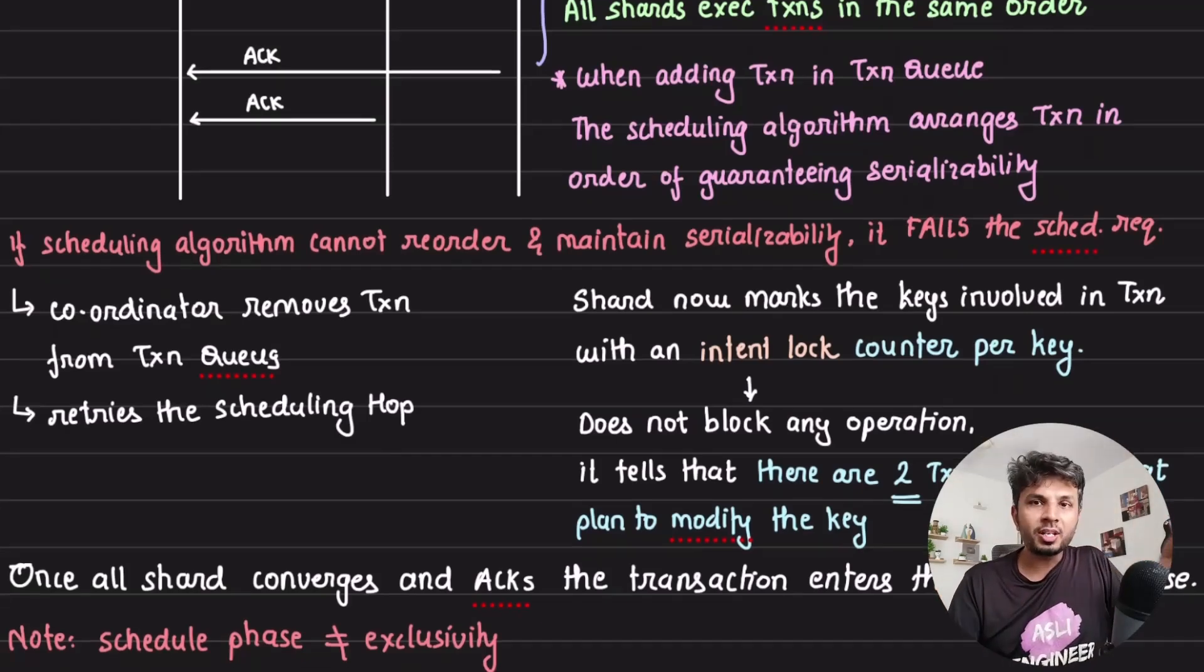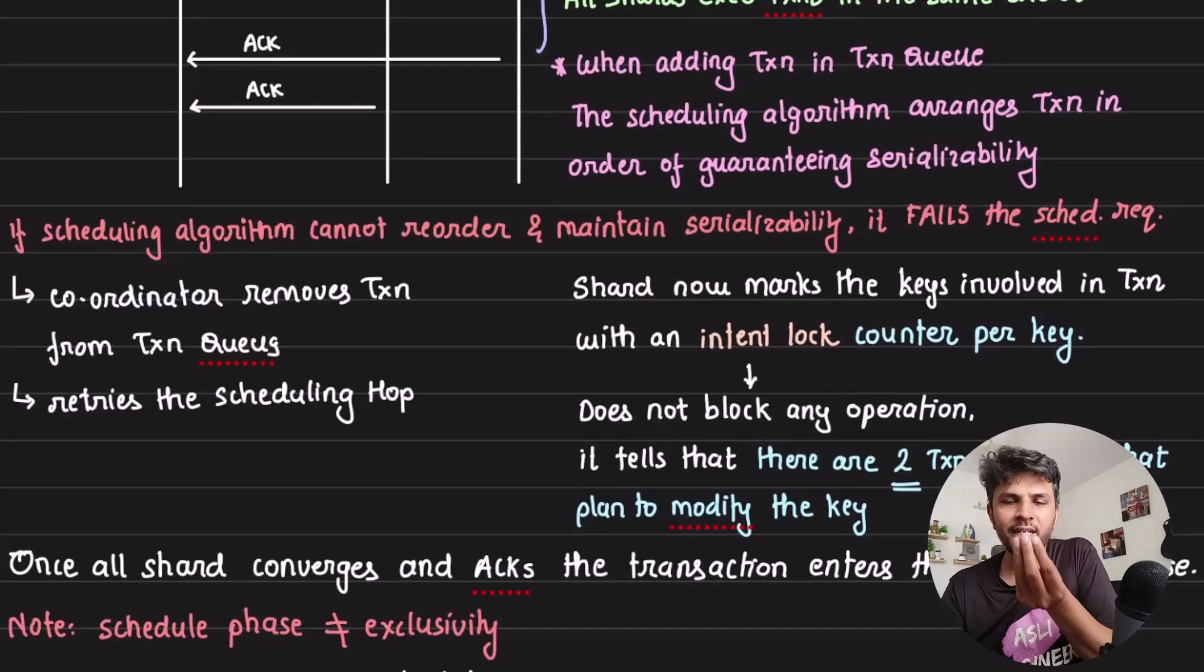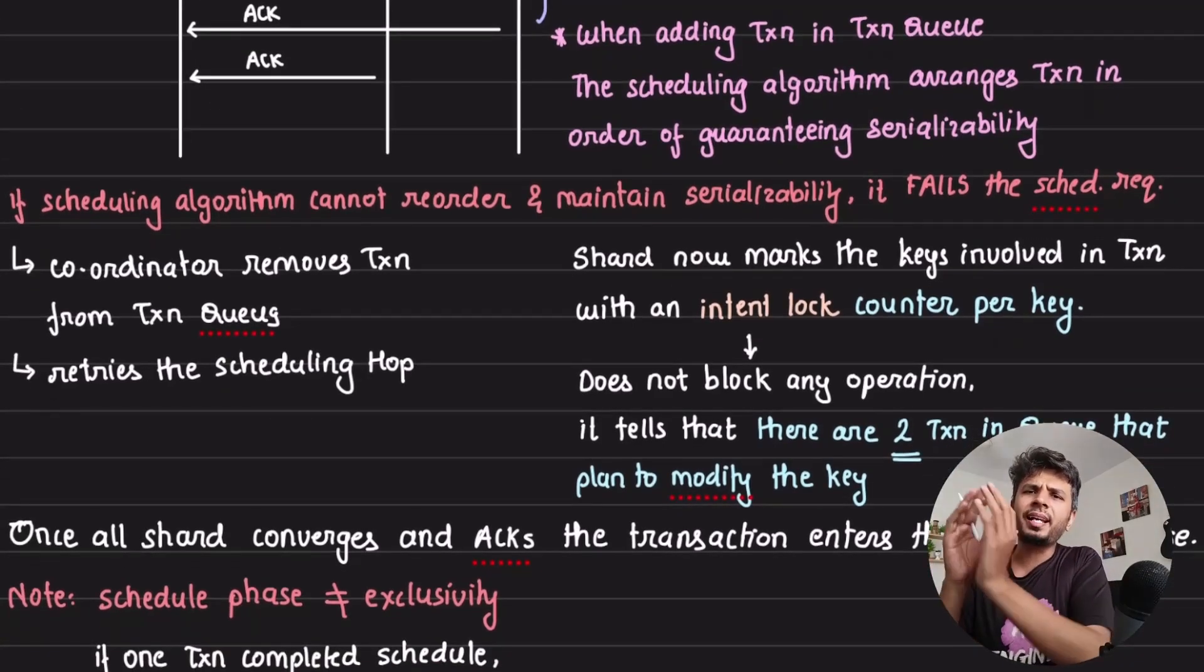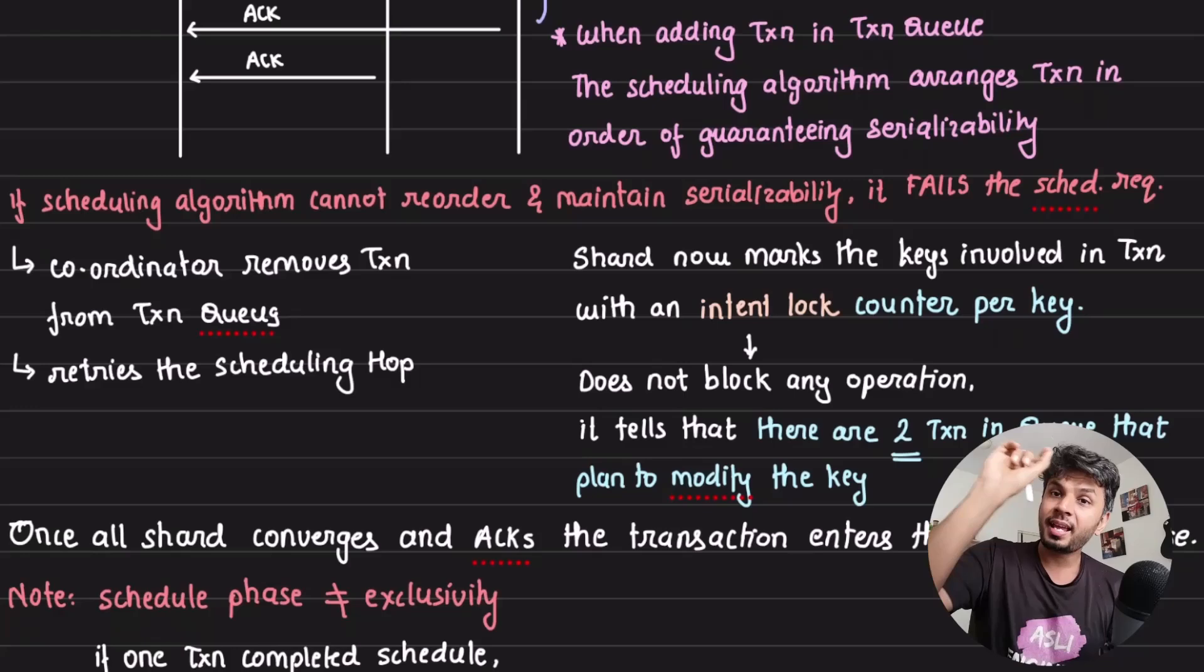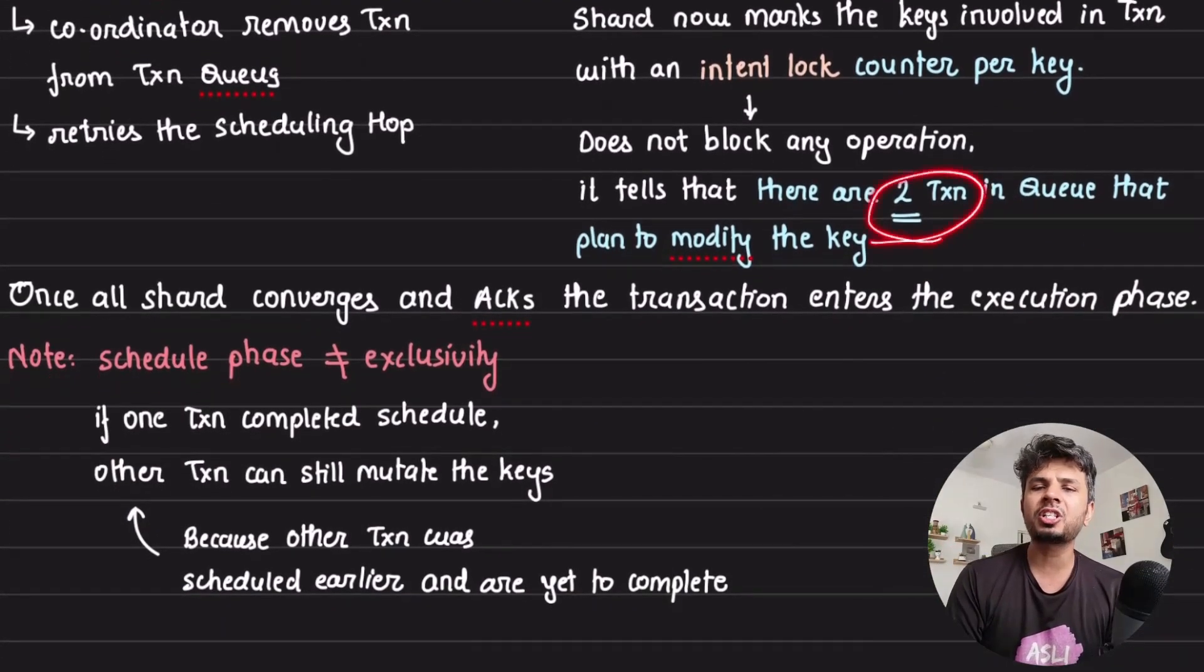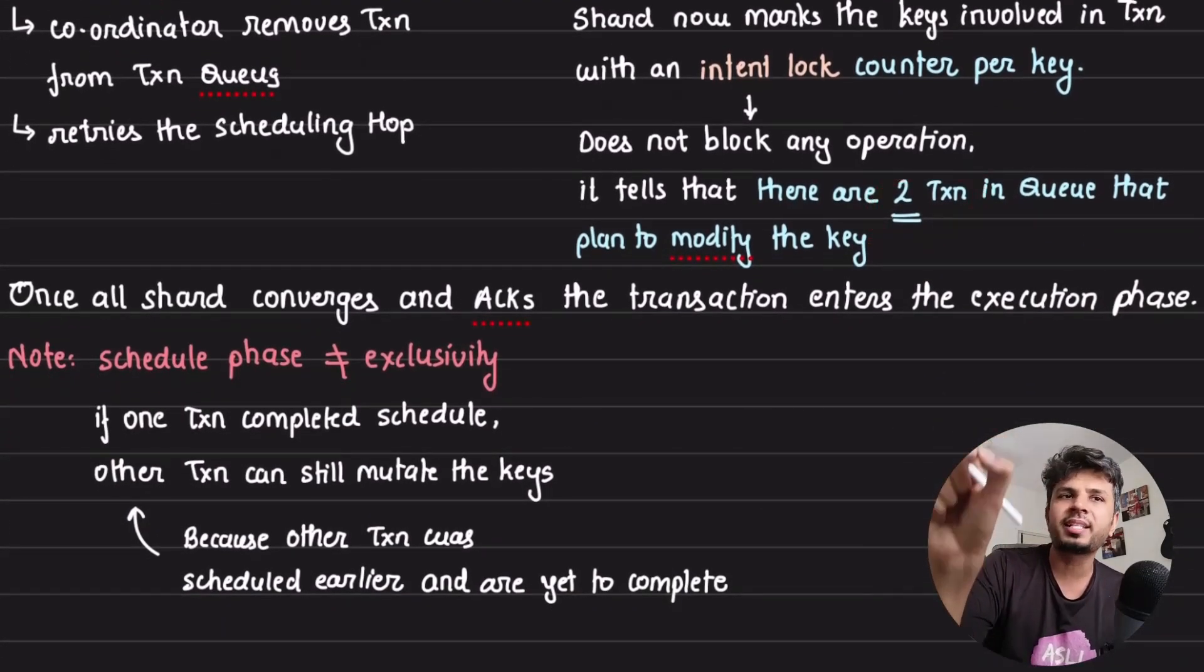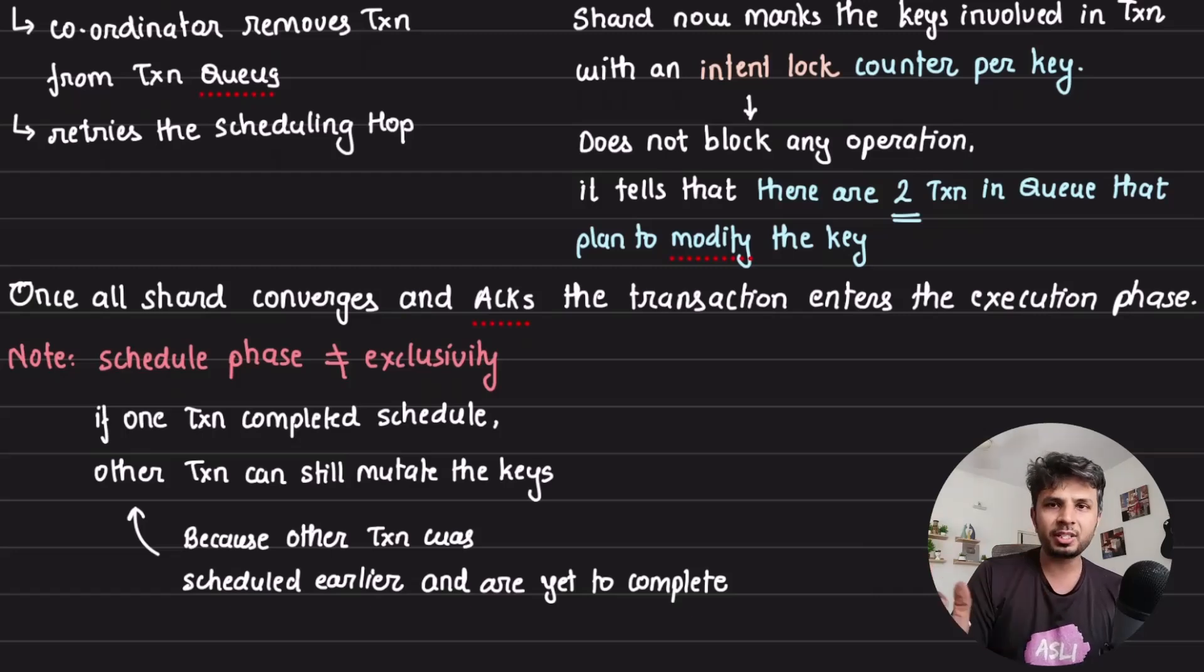When your transaction thread receives it, it maintains something called an intent lock, which basically says how many transactions in the transaction queue are waiting for that key. They are not blocked, nothing is locked over here. It just maintains that how many transactions are interested in modifying that specific key.